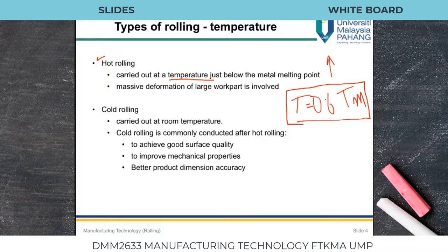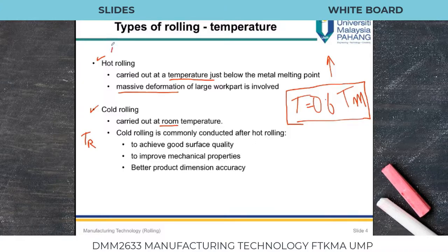Hot rolling involves massive deformation with enhanced properties such as increased strength and hardness. In cold rolling, the process is carried out at room temperature. Cold rolling is commonly conducted after hot rolling — so first we do hot rolling at high temperature, then we do cold rolling at room temperature.